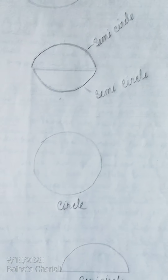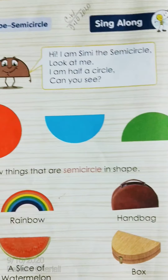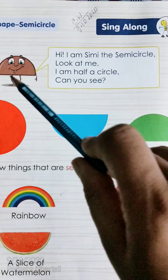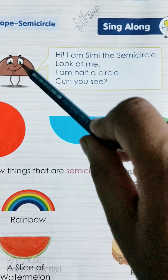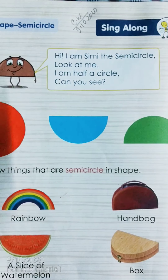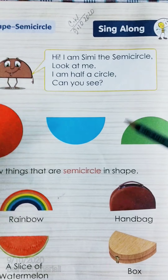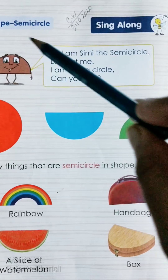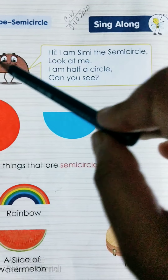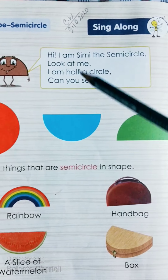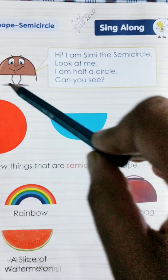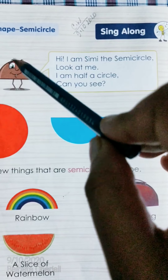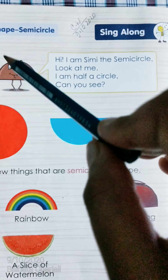Now we are going to understand things with the help of our book. Dear students, sing along. This half circle says: Hi, I am Semi the semi-circle. Look at me. I am half a circle. I am not a circle but I am half a circle. Can you see me? This is what the half circle tells us, and this is the picture of the semi-circle.